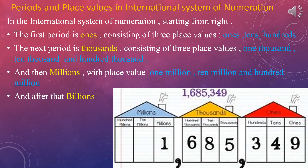The next period is thousands, which consists of three place values: one thousand, ten thousand, and hundred thousand. Then millions, with place values one million, ten million, and hundred million. After that, billions — one billion, ten billion, and hundred billion. These are the periods and place values in the international system of numeration.